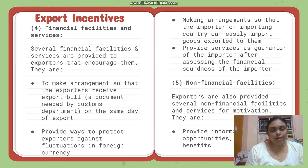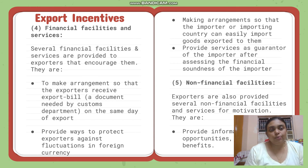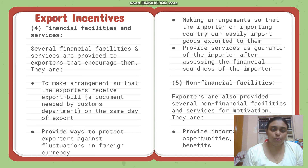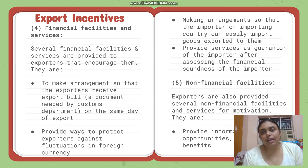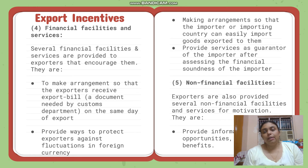The fourth is financial facilities and services. Several financial facilities are provided to exporters to encourage them: arrangements so that exporters receive their export bill — a document needed by the customs department — on the same day of export, reducing effort for the exporter. They are also protected against fluctuations in foreign currency, arrangements are made so importing countries can easily import goods, and the government provides services as guarantor of the importer after assessing their financial soundness.